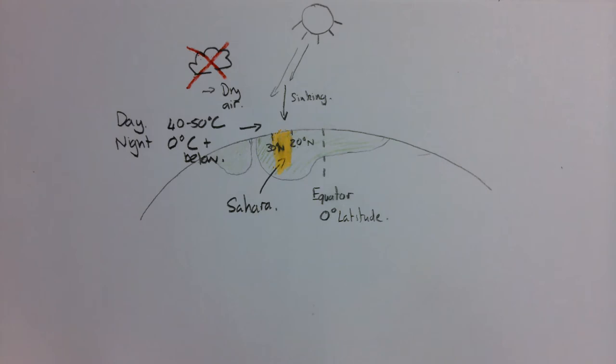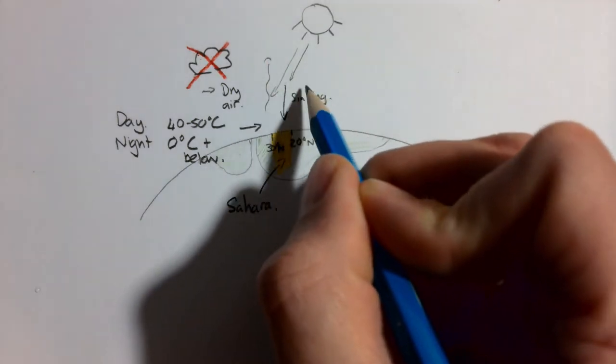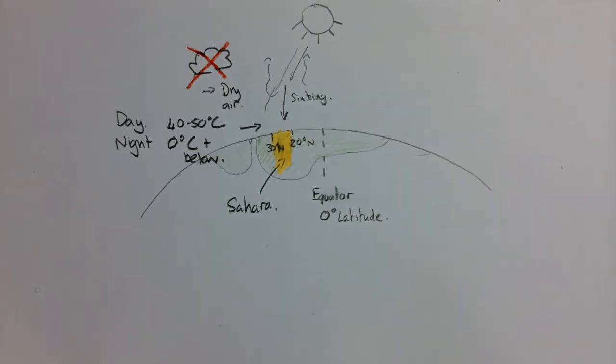And what will happen to the temperature at night? Good. It falls to zero degrees centigrade or even lower. Why does the temperature drop so low at night? That's right. Because there are no clouds to insulate the air and so all the heat is lost out into space. Brilliant.